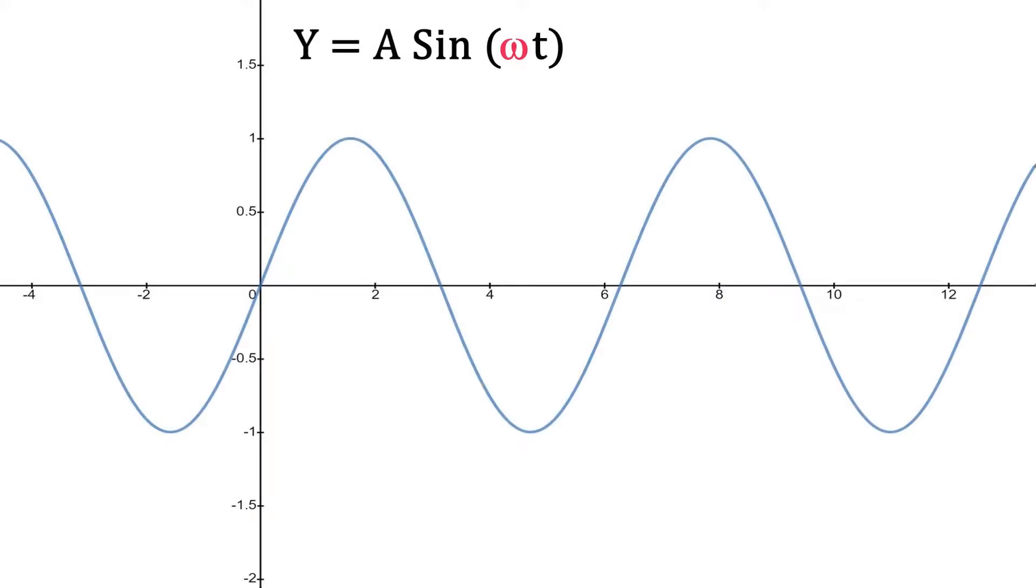Here we have the equation y equals A sine omega t, where omega is the angular velocity and t is time. So omega t gives us an angle in radians.